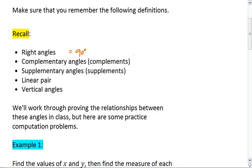Complementary angles are angles whose measures add to 90 degrees. Supplementary angles are angles whose measures add to 180 degrees.